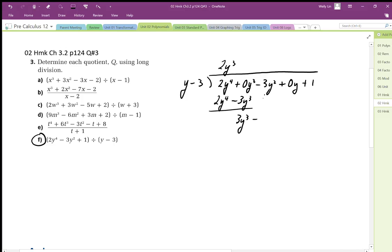Bring down that term, so we have 3y squared. This becomes plus 3y squared. So 3y cubed minus, now this becomes 3 times negative 3, so negative 9y squared. We get positive 6y squared.